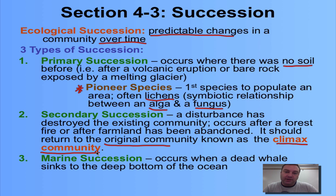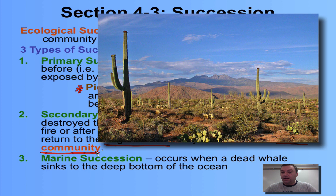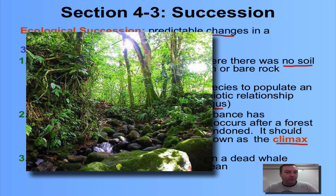In our area of the country, the climax community would be a deciduous forest with hickories, maples, oaks, etc. Out in Arizona it could be a desert, and in Brazil it would be a rainforest. It varies with what part of the world you're in, but there will be a climax community for that area.